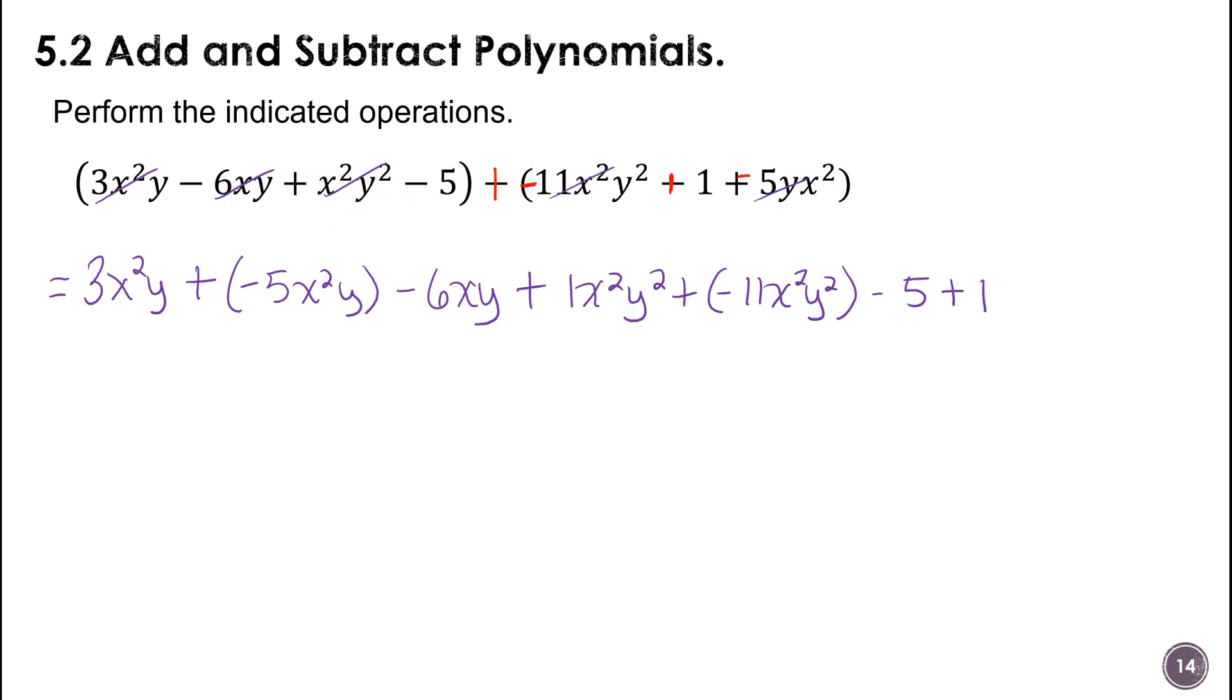All right. Well, I've rewritten all of them. I'm not really finished at all. So x²y, that's 3 and negative 5, so negative 2x²y. I'm going to keep negative 6xy. It doesn't have a match. On the x²y², I have 1 and negative 11, so that's going to be negative 10x²y². And then last, I have negative 5 plus 1, so that's minus 4. Okay, and that's the end of section 5.2. And the third video is complete.